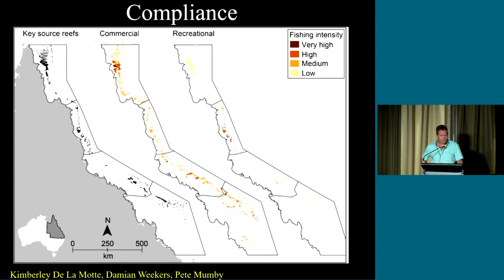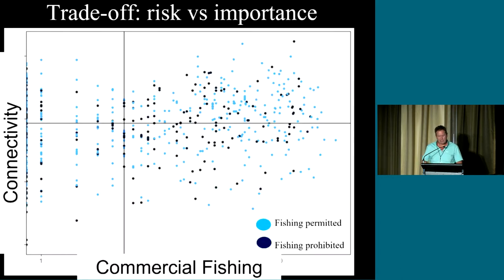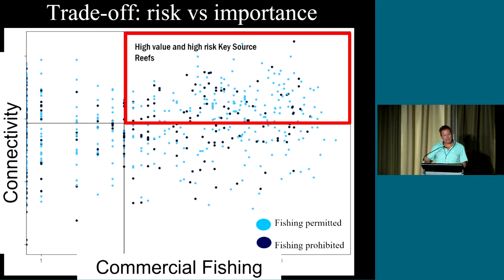We also looked at recreational fishing and what we did there was adopt the models that Damien and his colleagues at CSIRO have developed to predict the probability of recreational fishing across the reef. So we have recreational fishing, commercial fishing and information on where the most important ecologically important sites are from a coral dispersal perspective. If you were to plot, this is an example, if you were to plot the connectivity value, if you imagine the y-axis is a sort of ecological value against the intensity of commercial fishing, you'll end up in this top right-hand corner which has areas of high importance from a commercial fishing perspective or a high risk of commercial fishing, but also of high ecological importance. So there's potential conflict here.